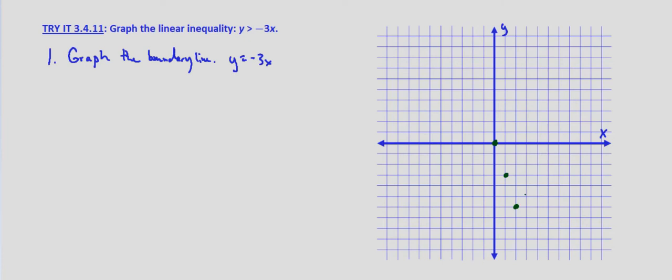So then we just connect the dots with our dashed line. And again, it's dashed because the inequality is non-inclusive. It's strictly greater than, not greater than or equal to.